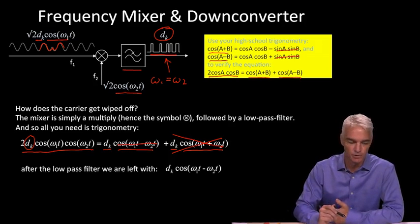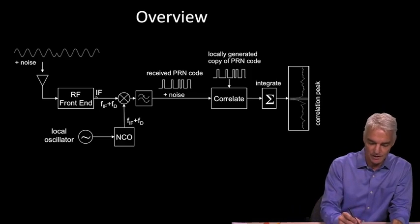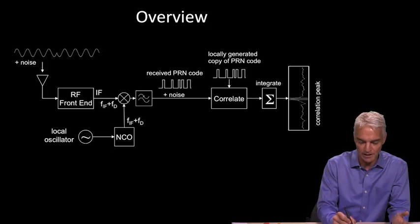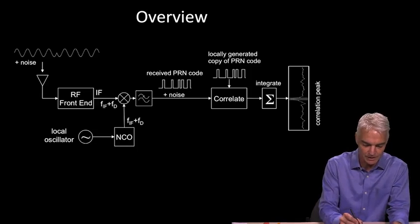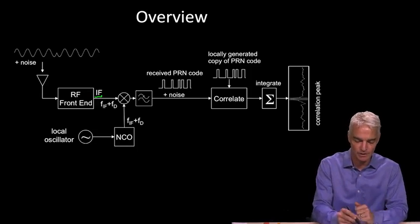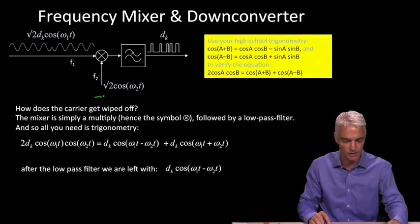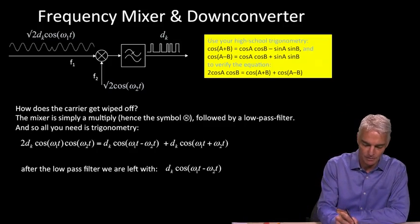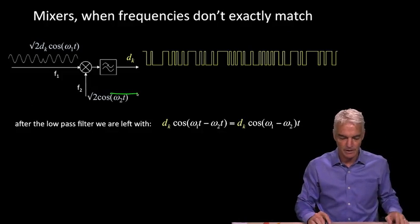We also talked about intermediate frequencies at the front of the receiver. In the front end you have similar down converters, but instead of multiplying by the exact same frequency you multiply by something offset by an intermediate frequency, and then instead of a low-pass filter you have a band-pass filter. That's how we mix down to intermediate frequency — the same equations, but with a band-pass filter and an intermediate frequency at that stage.